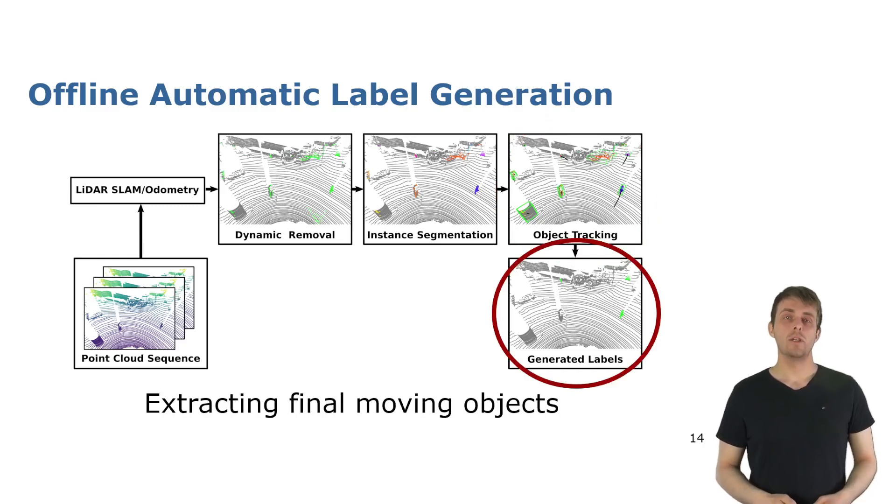From the tracking we get information like the travel distance or the speed and we use these to decide if an object moves or not. So again this is an offline label generation method and cannot be used for online operation. The advantage of having an offline label generation method is that for a single scan we can use basically preceding and succeeding scans to have a more informed decision about the moving objects in the scan.